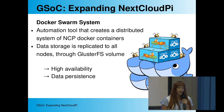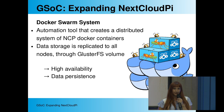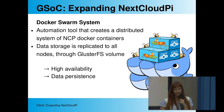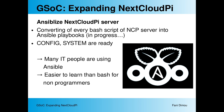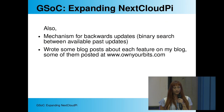I created another automation tool that builds a distributed system of NCP Docker containers where data storage is replicated over all nodes using Docker Swarm and GlusterFS. It provides high availability and data persistence — if your machine crashes, you still have access to your Nextcloud Pi data via another node. I also worked on Ansible-izing the Nextcloud Pi server, converting every shell script into Ansible playbooks. I also helped Nacho with the update system, implementing a mechanism for backward updates.